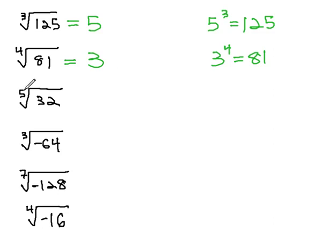The fifth root of 32 asks us what to the fifth power equals 32. Again, with a little guess and check, what we learn is 2 to the fifth power equals 32. And so, we will say the fifth root of 32 is 2.